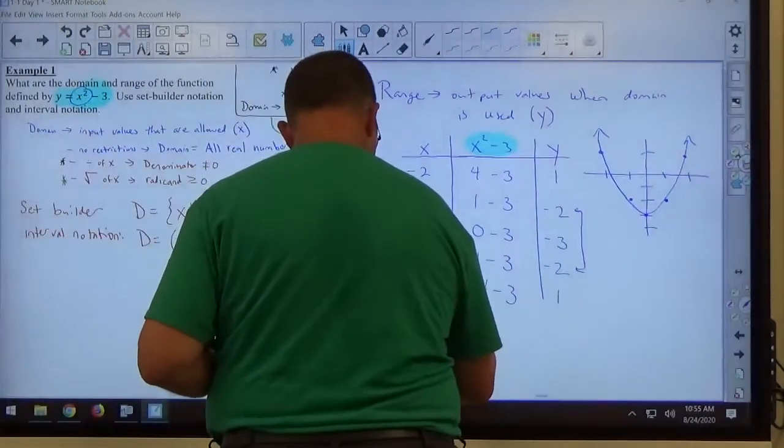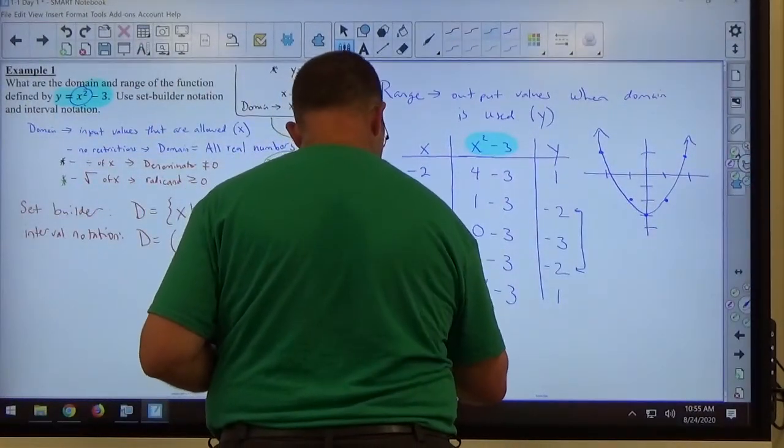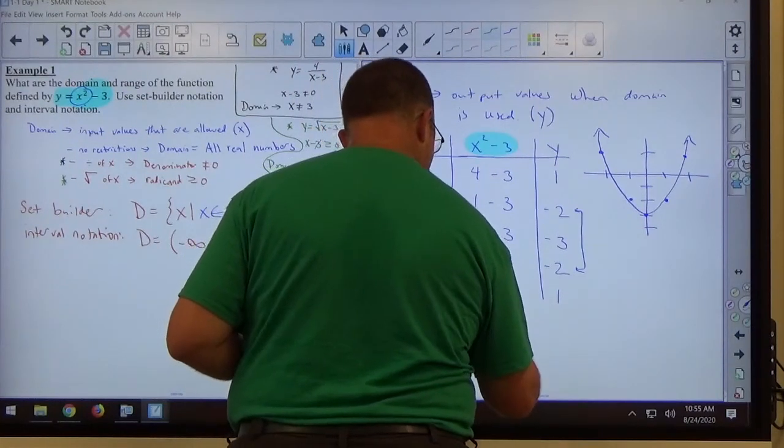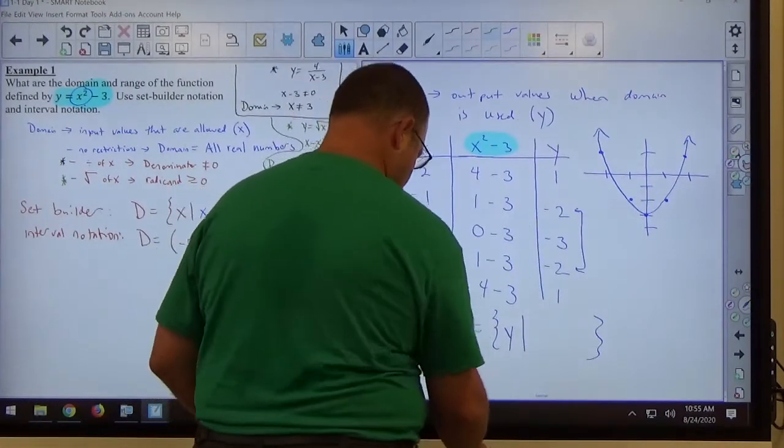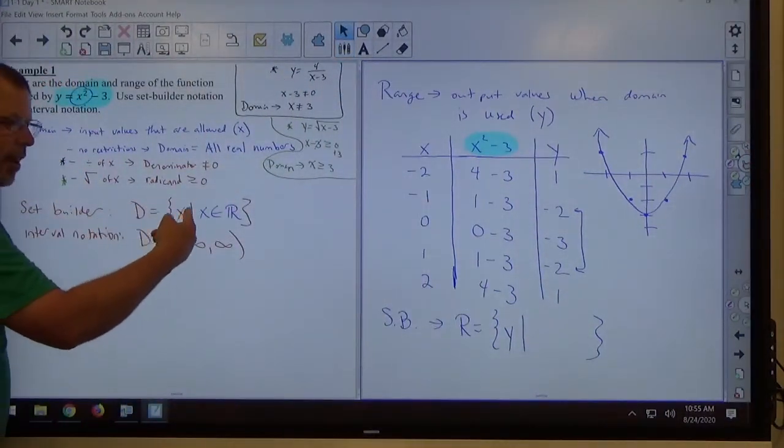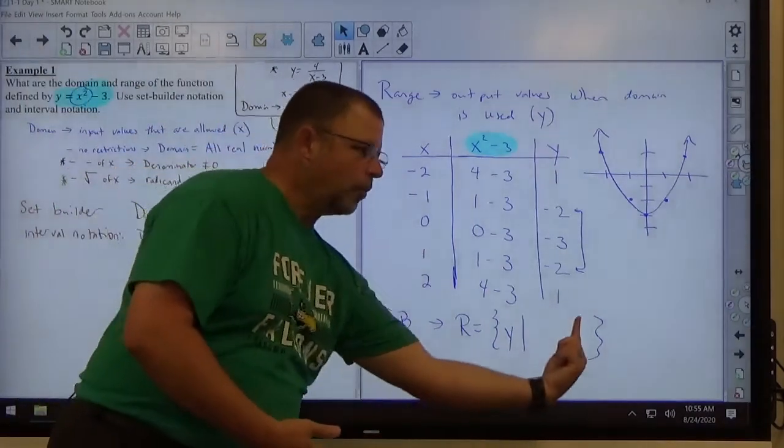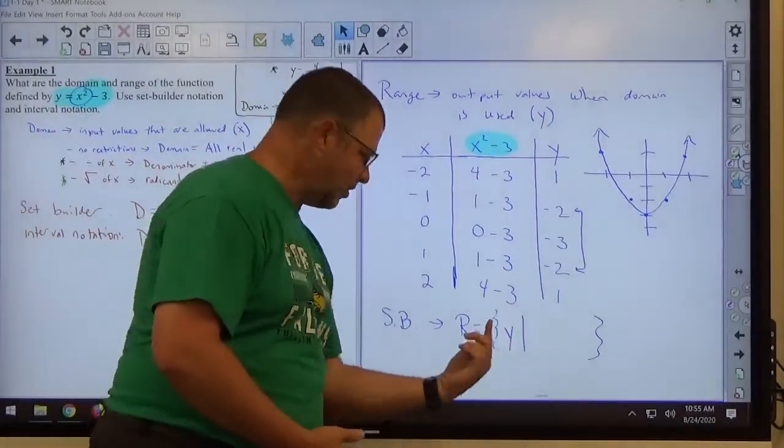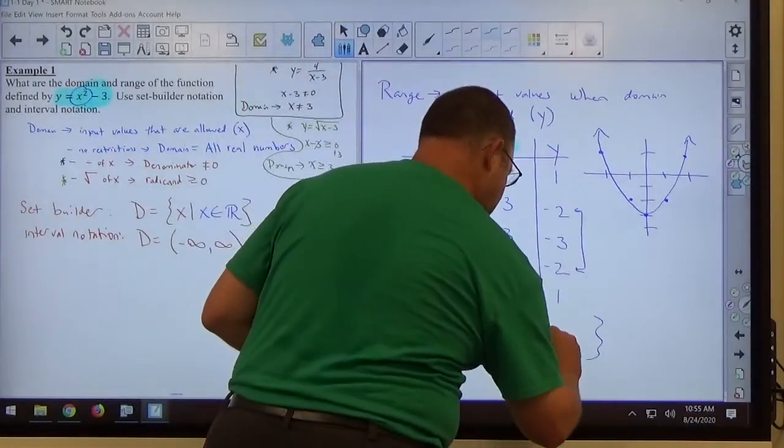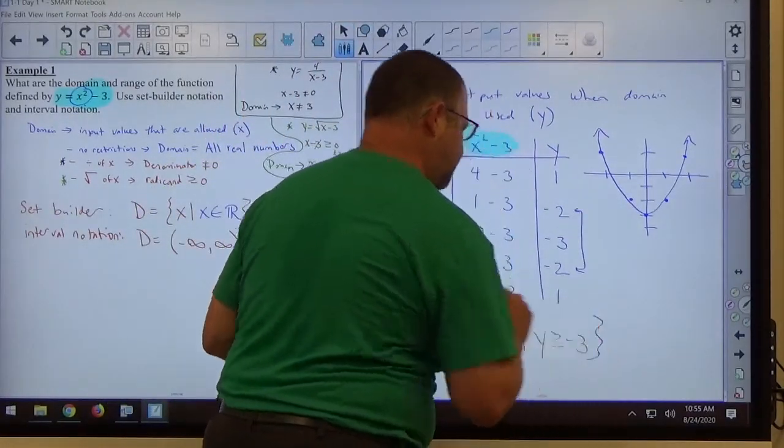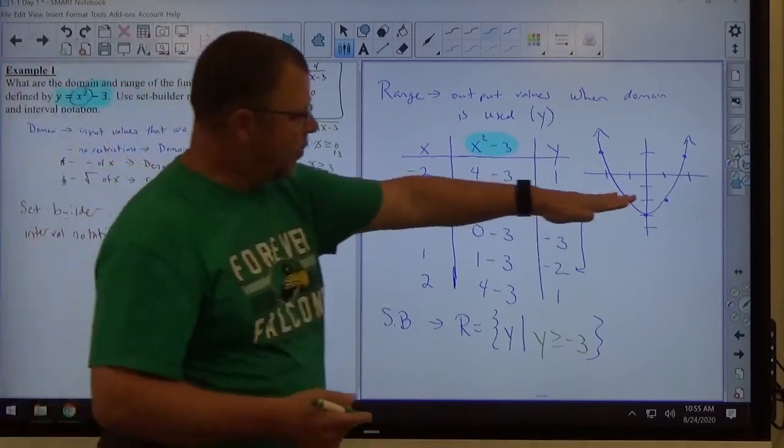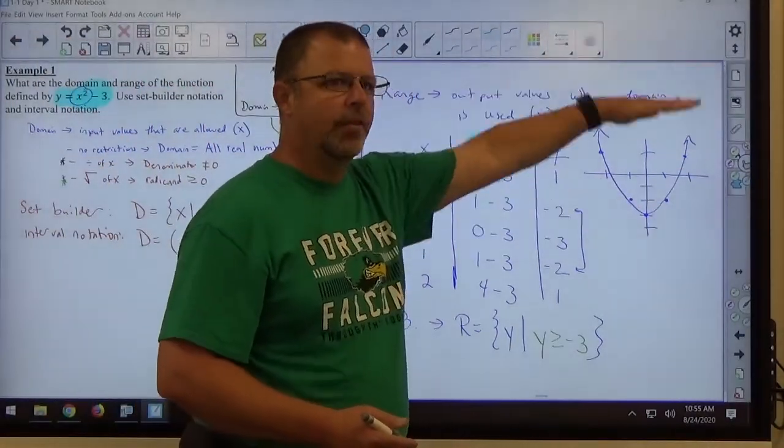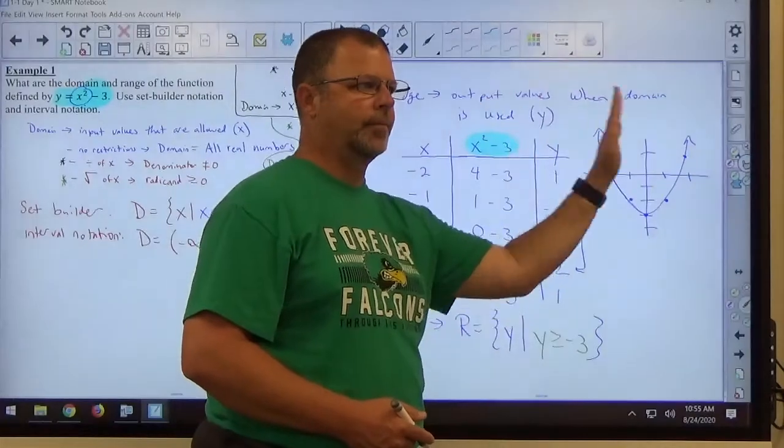If I'm doing set builder notation, I'm going to write range equals the set of all y values such that. Just like set builder for x, domain's the set of x such that, and it has the answer right there. Set builder for range is the set of y such that, and then we just put the answer in. Y is greater than or equal to negative 3. You simply describe inequality-wise what that output is. The answers are negative 3 and bigger. Range is about this. Domain is about that.